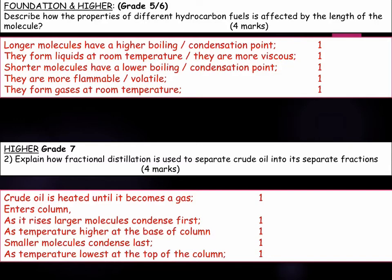For our second question: crude oil is heated until it becomes a gas, at which point it enters the column. As it rises, the larger molecules condense first, as the temperature is higher at the base of the column. Smaller molecules condense last, as the temperature is lowest at the top of the column.